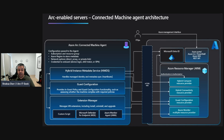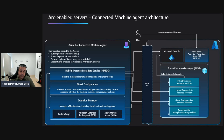Looking at the architecture: the Azure connected machine agent lets you manage Windows and Linux machines hosted outside of Azure, on your corporate network or cloud providers. The Azure connected agent package contains several logical components bundled together. These include the Hybrid Instance Metadata Service (HMDS), which manages the connection to Azure and the connected machine's Azure identity, and the machine configure agent, which provides functionality such as assessing whether the machine complies with required policies and enforcing that compliance.